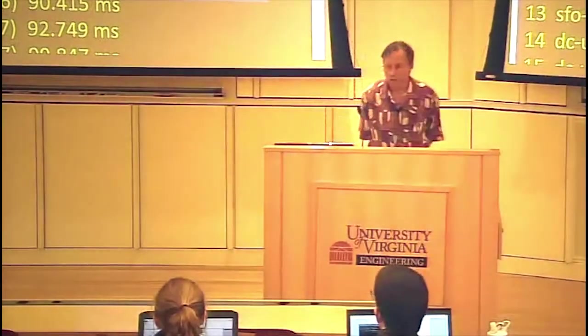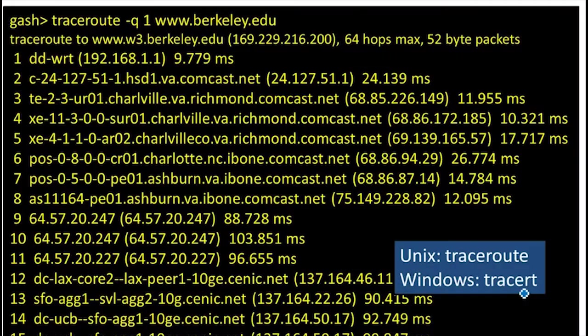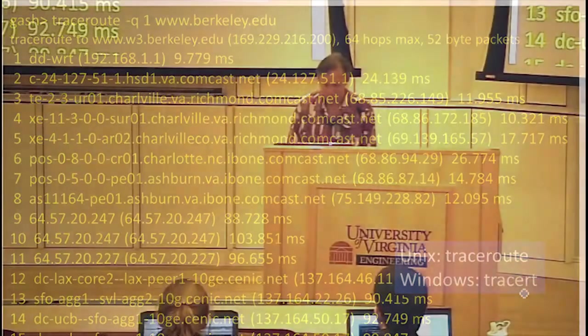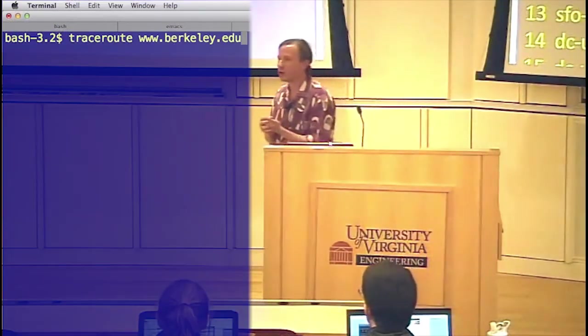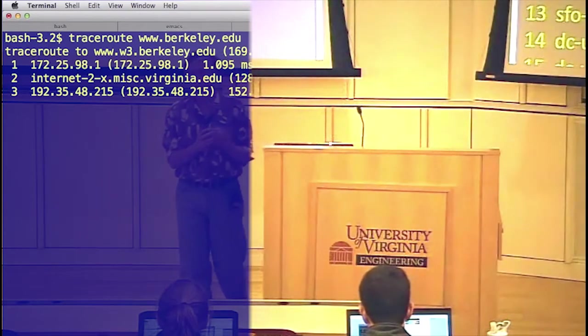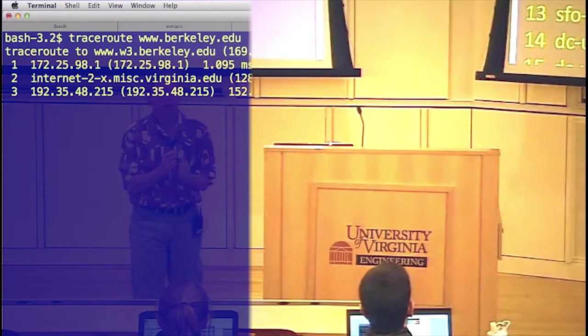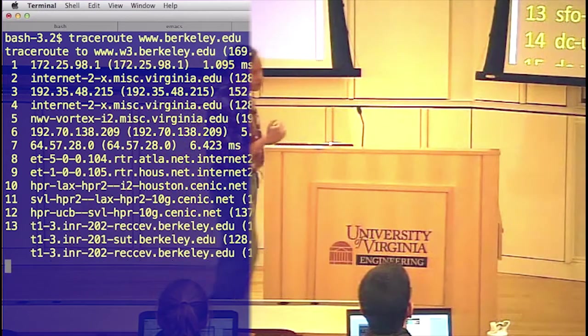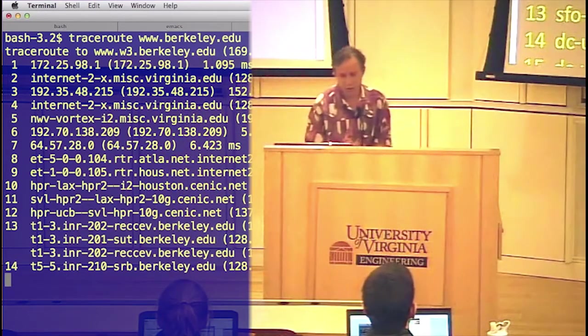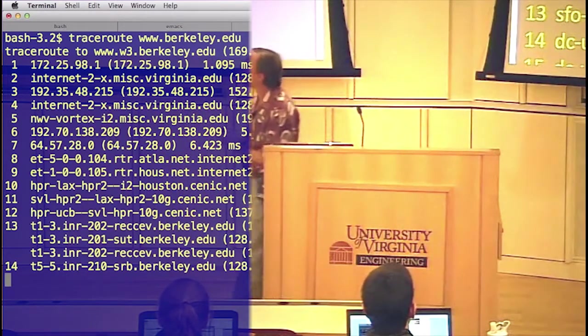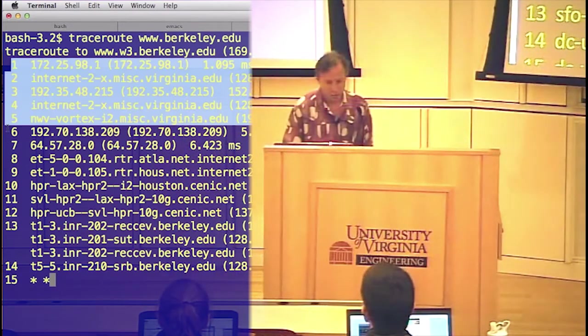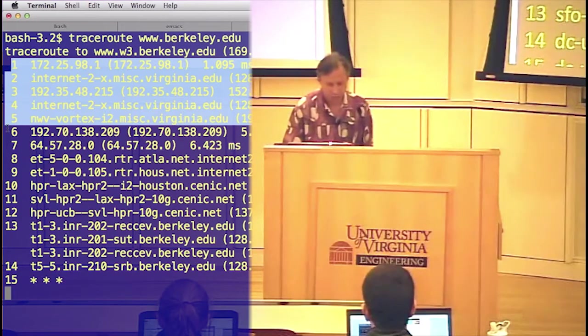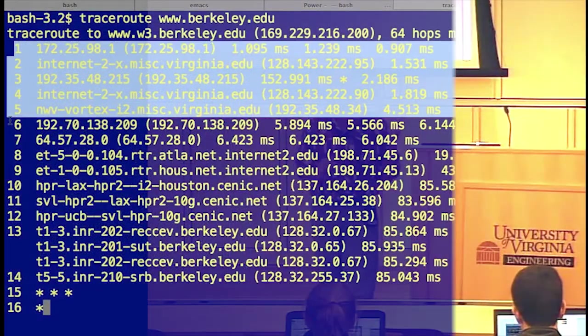We can actually see what they are. So we can run a traceroute. Maybe I should try running a live one. Okay, so we're going to run a traceroute. What traceroute is doing, I have a destination address, and I'm finding the routers along the way. So if I run a traceroute, I'll see all the places that my packet is traveling between here and Berkeley. It looks like we're going through the first five of them are all still in the University of Virginia.